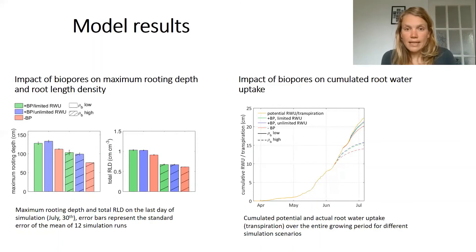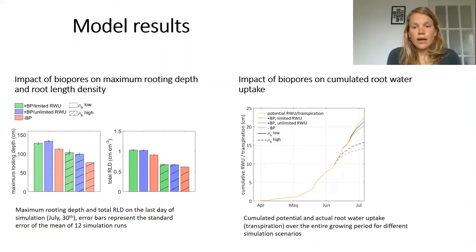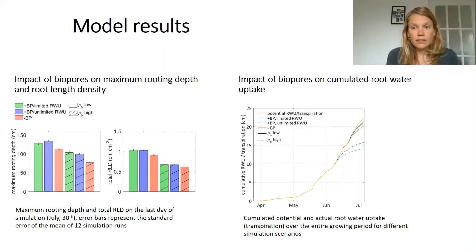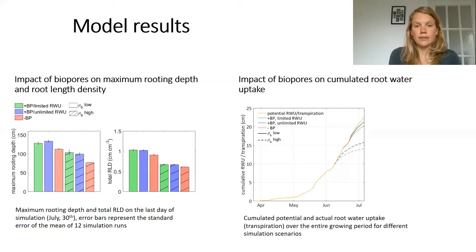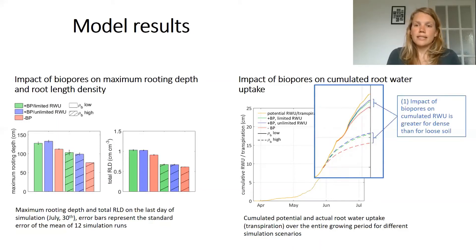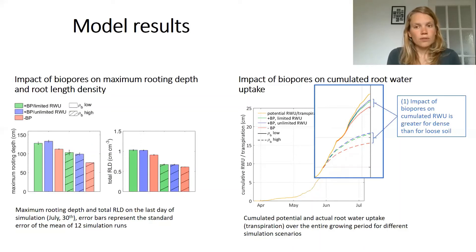In the graph on the right side you can see the impact of biopores on the cumulative root water uptake. In the first part of the graph until mid-June no stress occurs, thus the potential root water uptake rate is met. Afterwards there is the stress onset and transpiration demands can no longer be met. In the scenarios with biopores higher transpiration occurs, which is of course very positive. Looking more closely, the impact of biopores on cumulative root water uptake is greater for dense than for loose soil, because the relative increase in maximum rooting depth as well as root length density was greater for more compact than for loose soil.